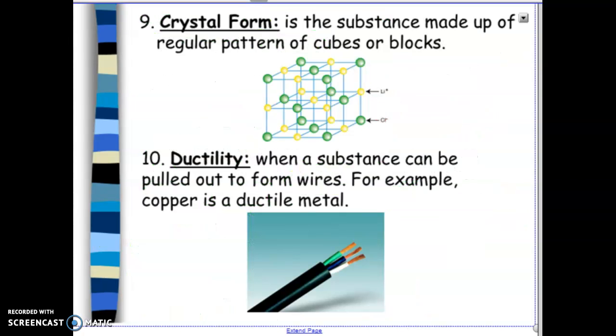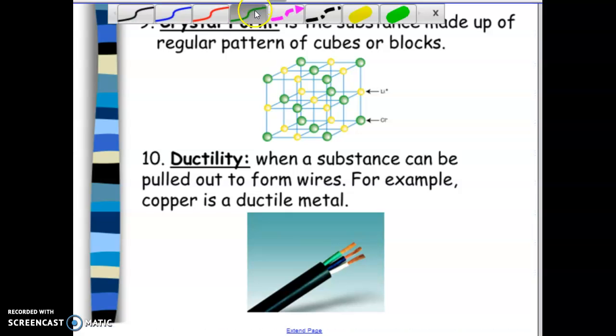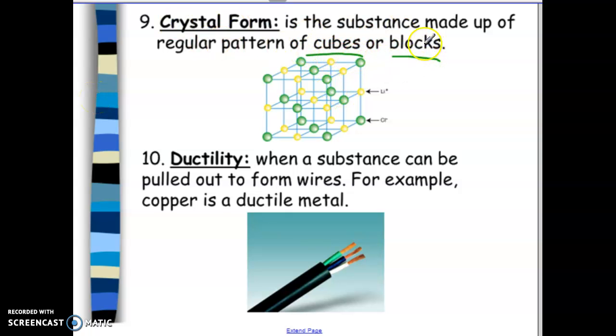So another way of describing physical property, and again, this is for solids, is looking at the shape that the solid is in. So the form of the crystals. This doesn't necessarily have to be cubes or blocks. These are just examples. So for example, salt. Salt, if you look at it up close, it is like little tiny cubes.